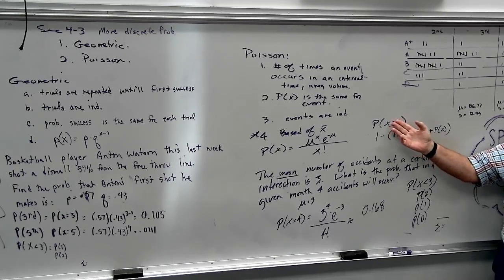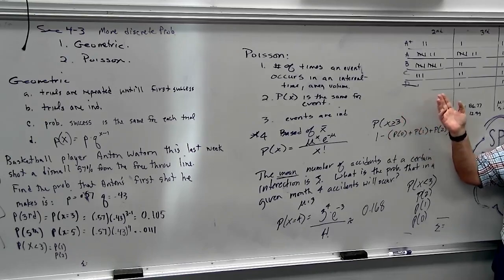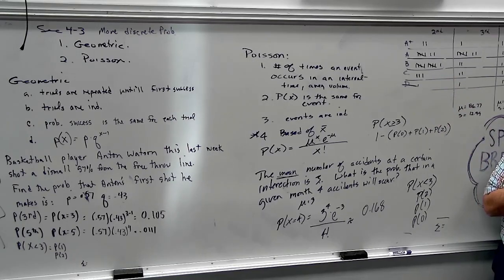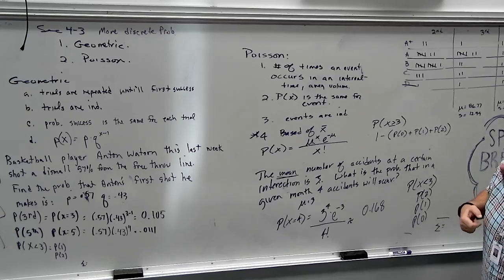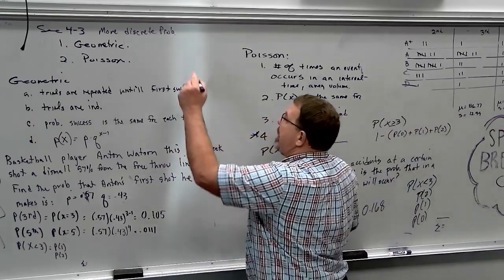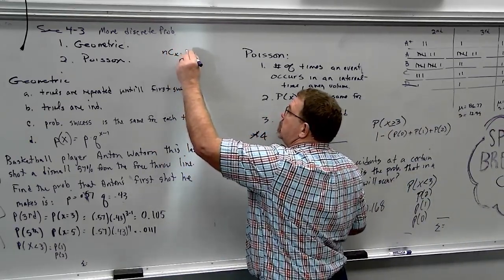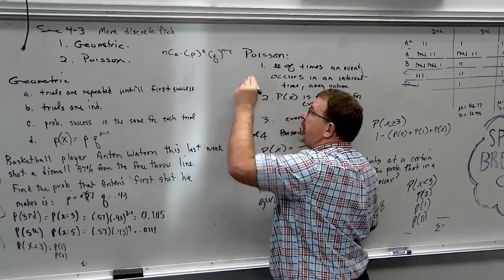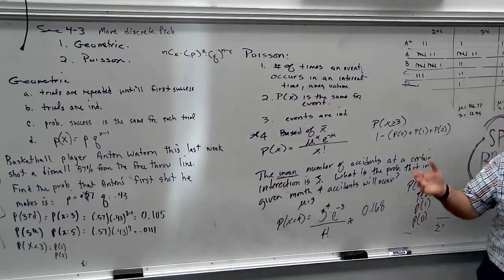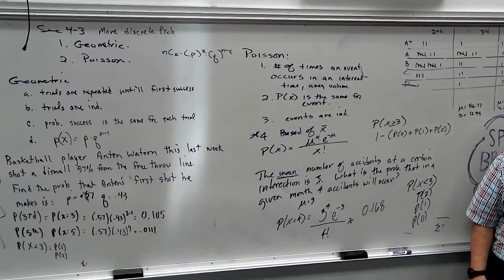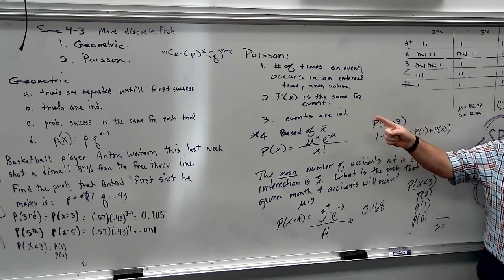I would have to find everything else. I would find 0, 1, and 2, add them all together, and go 1 minus that. You can't do this forever. Because it could be 3, it could be 4, it could be 5, it could be 10, it could be 20, it could be 30. I know it doesn't seem realistic, but it could happen. Any questions about that? So, we have three formulas now. We have this one, we have this one, and we have this one. That's what your test is next week.